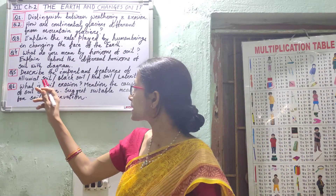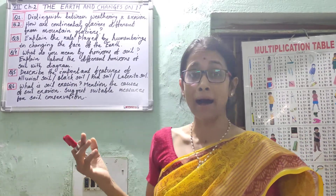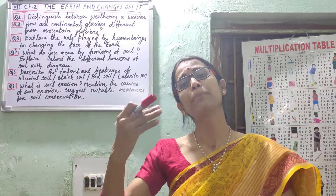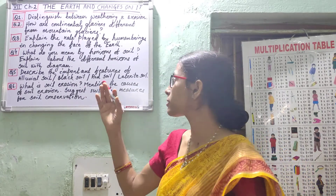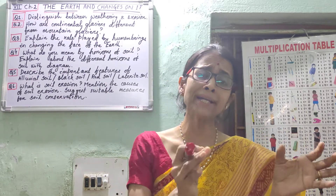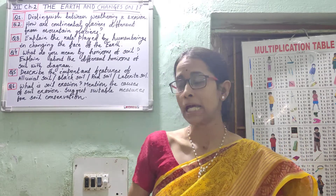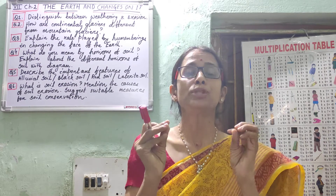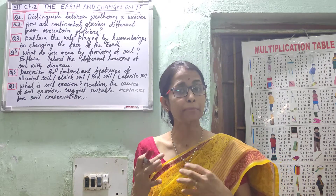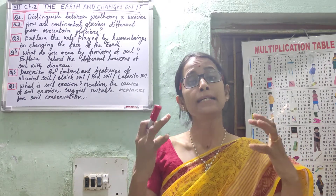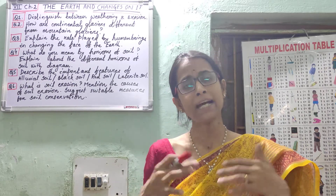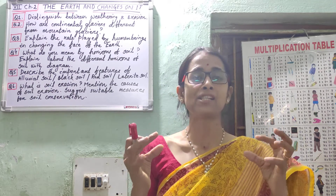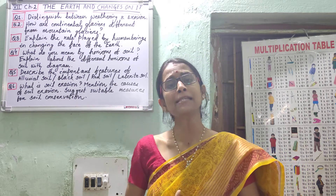The next question: describe the important features of different types of soil. For alluvial soil — first, it is formed due to the action of rivers, that is, due to the deposition of sediments by rivers. Second, it is very fertile and highly cultivated throughout India. Third, it is the most widely spread soil of India, found over the northern plains and the coastal plains.